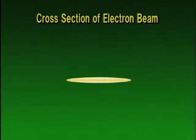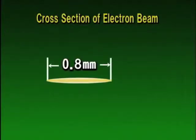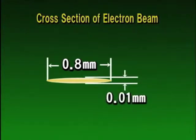In order to enhance brightness, the electron beam is focused to the extremely small size of 0.8 millimeters in width and 0.01 millimeters in height.